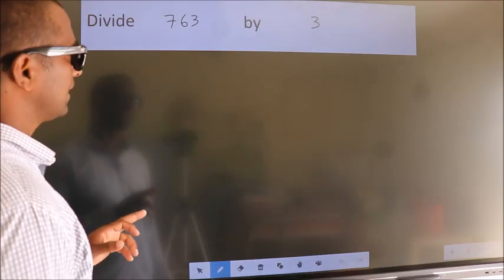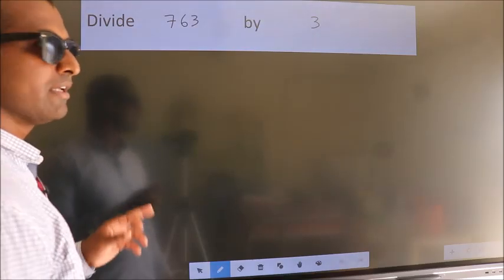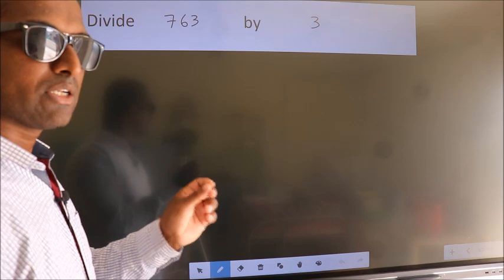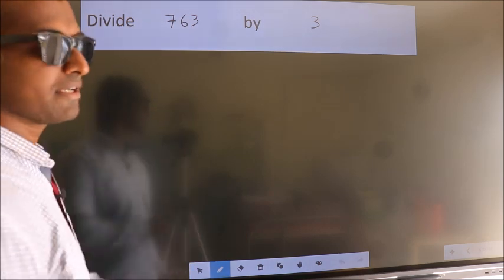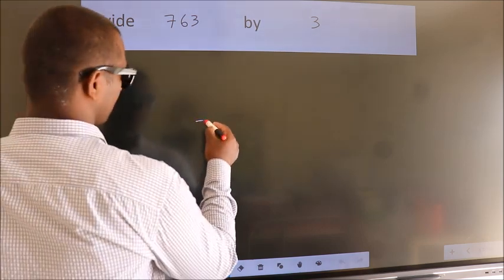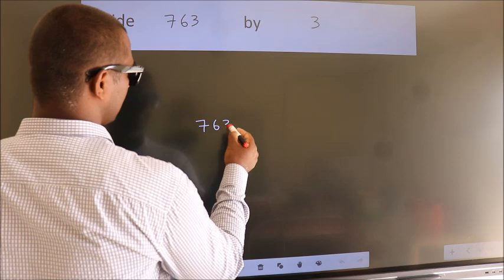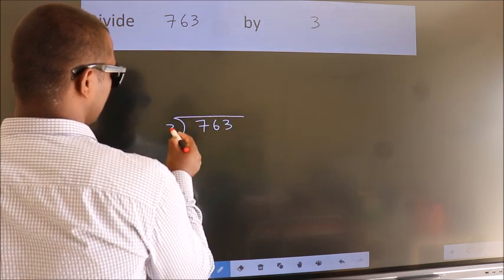Divide 763 by 3. To do this division, we should frame it in this way. 763 here, 3 here.